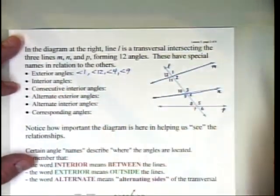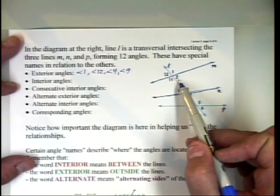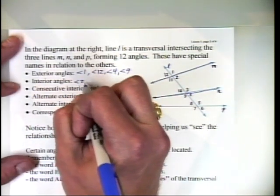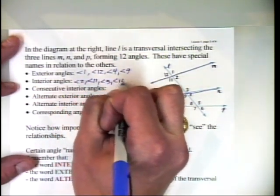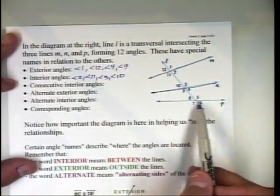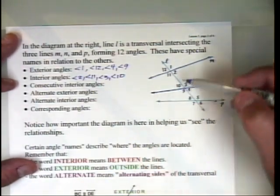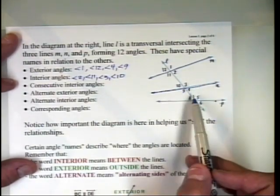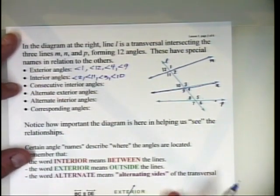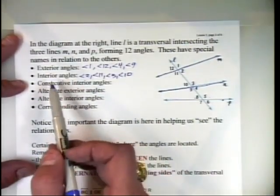Interior angles are between the two lines, on the inside. If I looked at lines N and P instead, the interior angles would be 4, 9, 5, and 8 — so we need to specify which two lines we're looking at. We also have special types of each: exterior and interior.